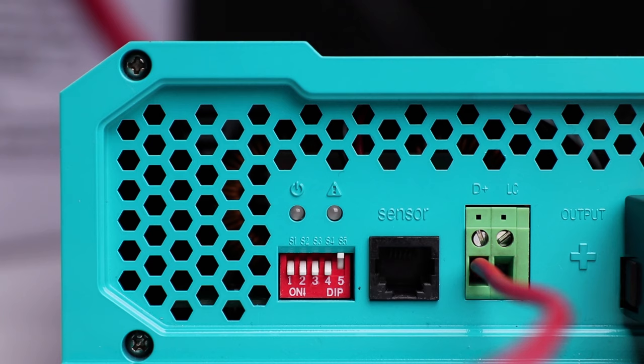The power indicator will be illuminated green when the charger is on and charging. You have successfully set up and programmed your DC-DC charger.